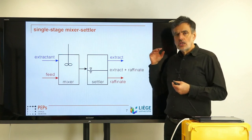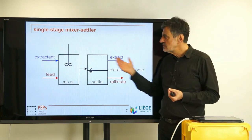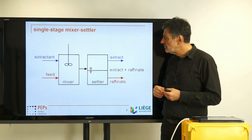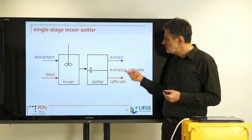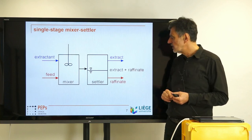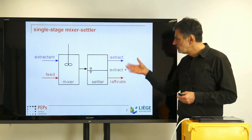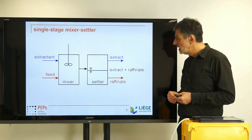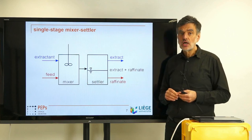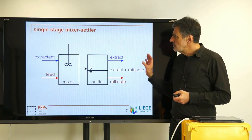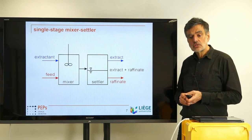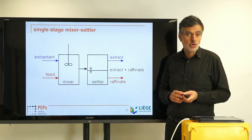One important consideration is that you don't know which of the phases is the dispersed phase. You also don't know which is the top and which is the bottom phase, because that depends on the density difference — the two can be inverted. That's why extract and raffinate are written neutrally: either way around, you find extract and raffinate at the end of the process. They are more or less in equilibrium, because you have sufficient time in the mixer to realize true equilibrium. This is a single-stage mixer-settler — one theoretical stage.